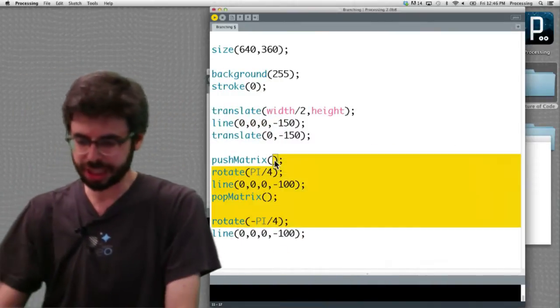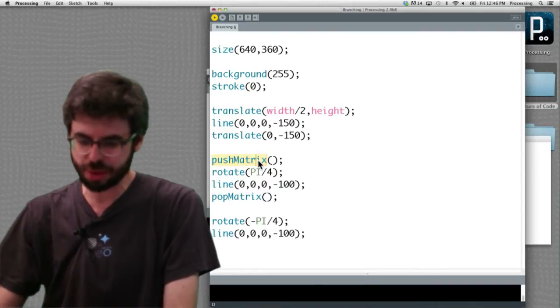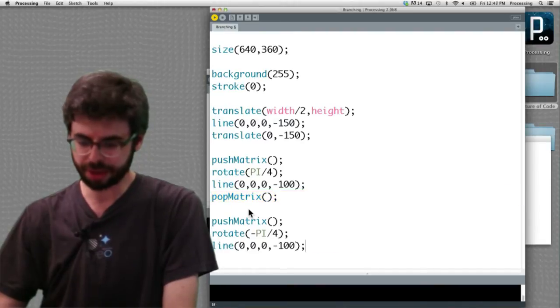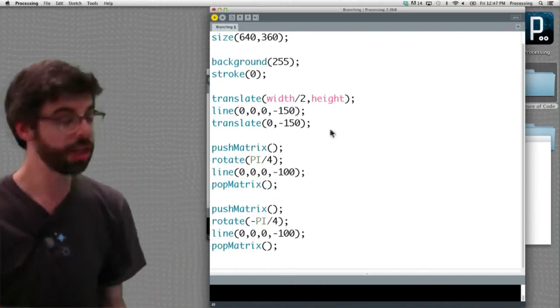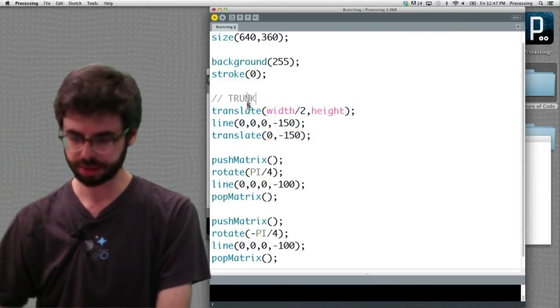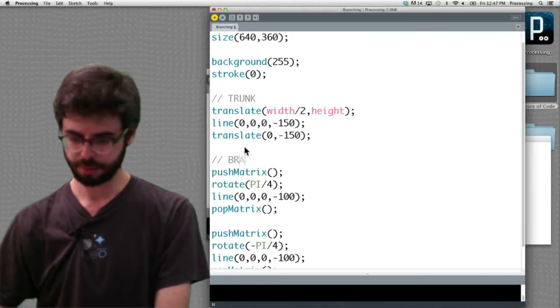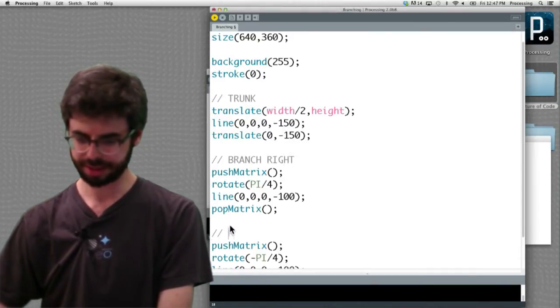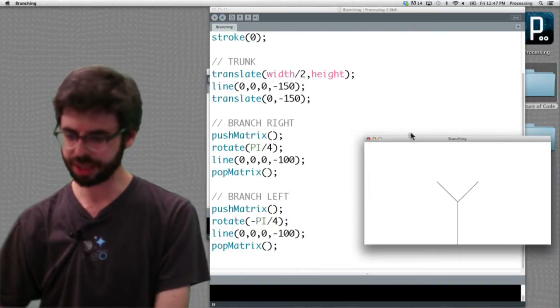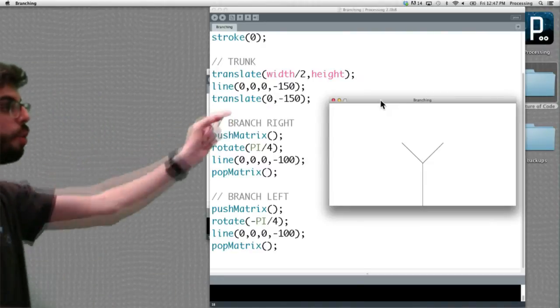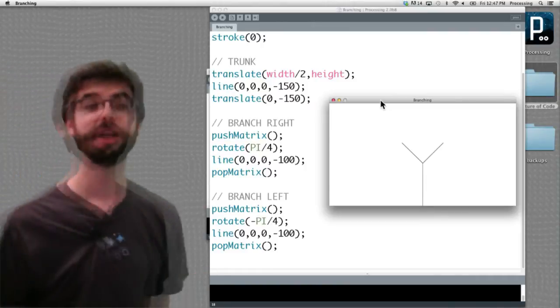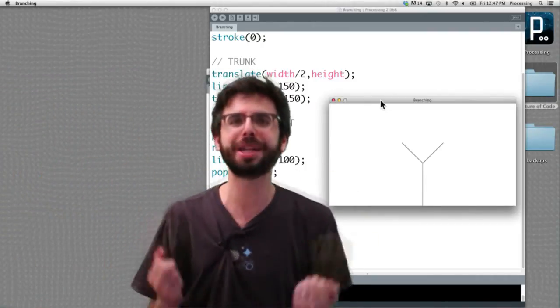And in essence, we could look at this and say, well we're going to be doing this over and over again recursively. We should probably push matrix and pop matrix around this particular branch as well. So this is the trunk of the tree. Let's put some comments in here. Trunk, branch right, branch left. If we look at all this stuff together, we can see what's going on. We drew the trunk, we moved to the end of the trunk, we branched right and drew a line, we branched left and drew a line. So this is how transformations work in processing.